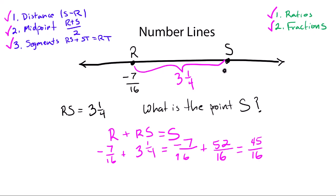And that's the answer. That's what point s is. It's 45 sixteenths, which if I want to express it as a mixed number, I know 16 goes into 45 two times with a remainder of 13. So that's two and 13 sixteenths. That would be point s.